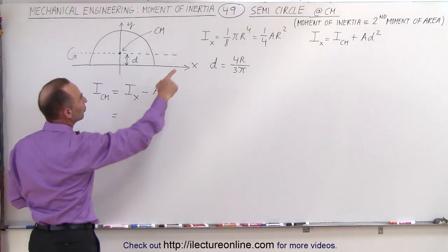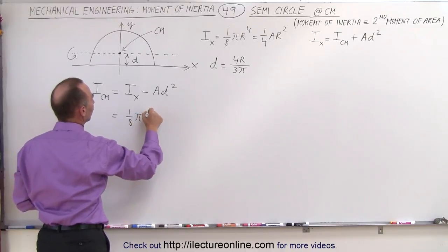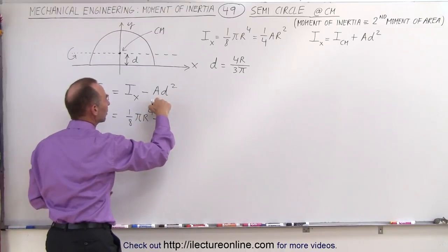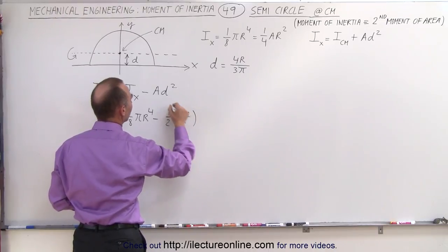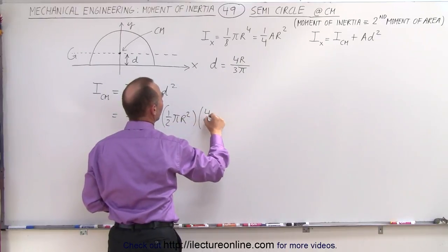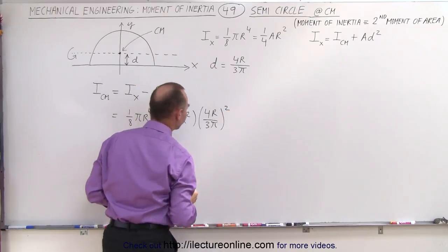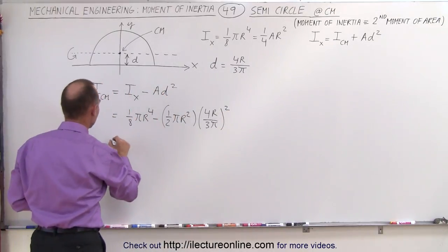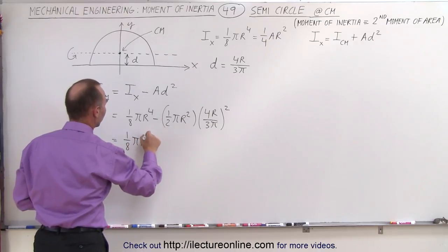So this is equal to i sub x, which is 1/8 pi r to the fourth, minus the area, which is 1 half pi r squared, times d squared.